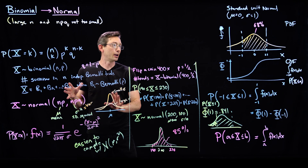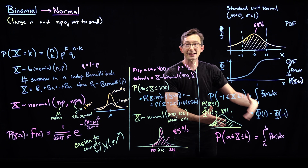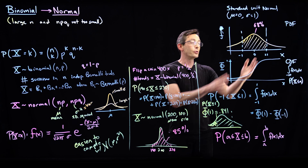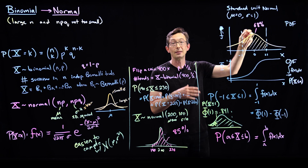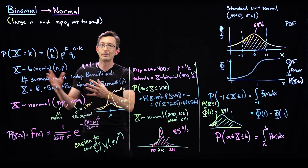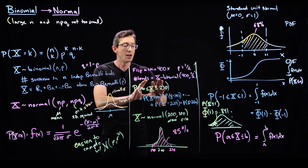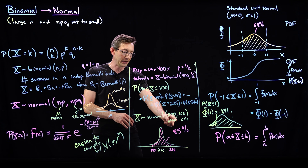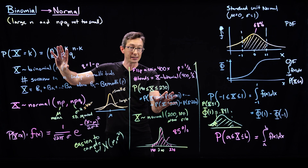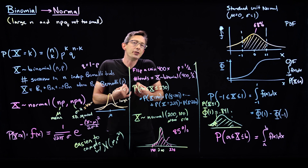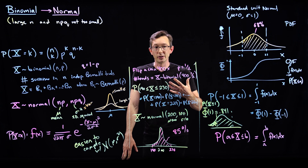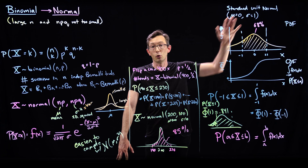The normal distribution is interesting and there are lots of things you can compute about it. The cumulative distribution tells you the probability that X is less than some value. You expect to be within one standard deviation of the mean 68% of the time. Computing Phi(230) minus Phi(190) is way easier than adding up all the exact binomial probabilities. You'll build a lot of intuition working in Gaussian normal distribution coordinates.